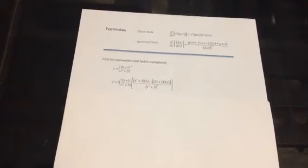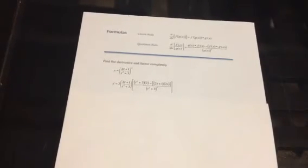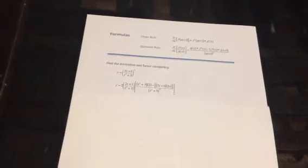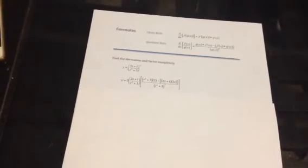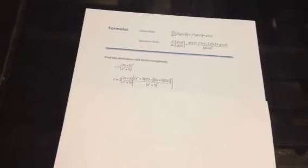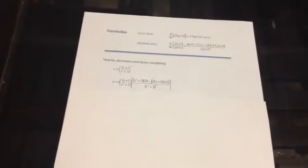Because we have a rational expression, we are going to have to use the quotient rule. In the quotient rule, we will find the derivative by taking the denominator, multiplying it by the numerator's derivative, which will give us 2. Minus the quantity of our numerator, 2t plus 1, multiplied by the derivative of the denominator, 2t, all over the denominator squared, (t squared plus 3) to the power of 2.